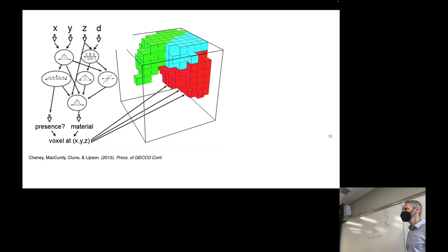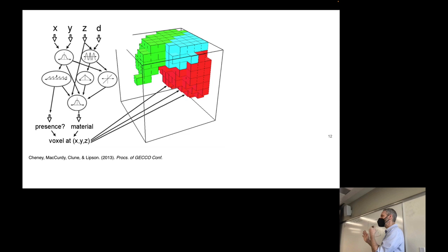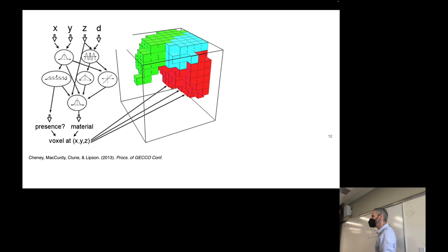Including d biases it towards certain kinds of shapes or certain kinds of designs. Remember, this is what CPPNs do — they bias evolution towards symmetry and repetition. They also tend to bias towards contiguous, connected pieces, so we get contiguity, repetition, and symmetry. Including d biases evolution towards a particular kind of symmetry. We spent quite a bit of time in this course talking about bilateral symmetry, but there's another popular form of symmetry in nature we haven't talked about as much: radial symmetry. By throwing in d here, they give evolution the option of sampling from the space of radially symmetric shapes.